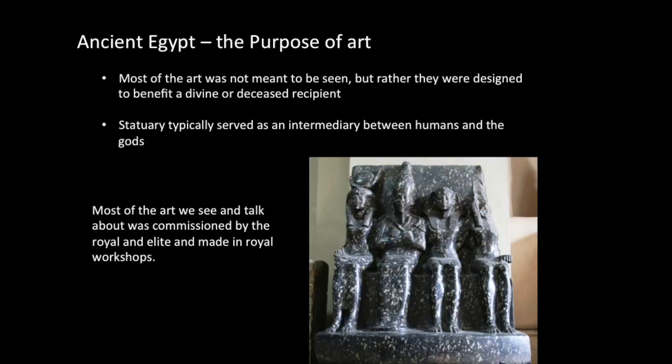The purpose of ancient Egyptian art: statuary provided a place for the recipient to manifest and receive the benefit of ritual action. Most of the art was not meant to be seen, but rather designed to benefit a divine or deceased recipient. Statuary typically served as an intermediary between humans and the gods, providing a conduit for the spirit, or ka, of that being to interact with the terrestrial realm. Family chapels with the statuary of a deceased forefather could serve as a sort of family temple. Preserved letters let us know that the deceased was actively petitioned for their assistance, both in this world and the next.